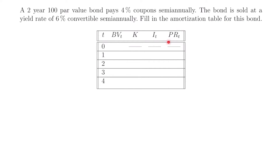This is the amortization table — sometimes also called an amortization schedule. What we want to do is fill in each of the columns and all of the rows, which correspond to different values: the book value, the amount of the payment, the amount of interest accumulated, and the amount of principal paid at particular moments in time for the bond.